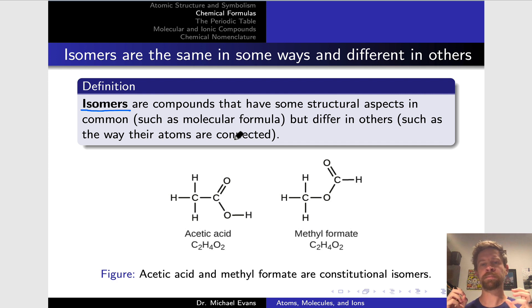Isomers are compounds that are the same in some structural aspects but different in others. For example, isomers can have the same molecular formula but have their atoms connected in different ways, and this leads to constitutional isomers. They are identical in composition, same numbers and types of atoms, but they differ in their constitution, or the way their atoms are connected. This is a fancy old-timey term for the way their atoms are connected.